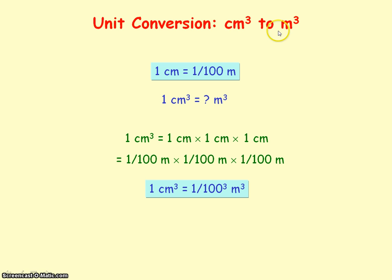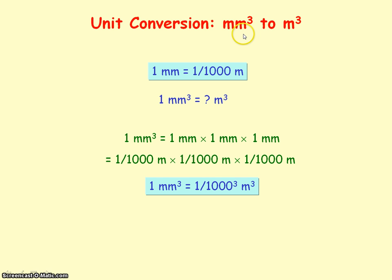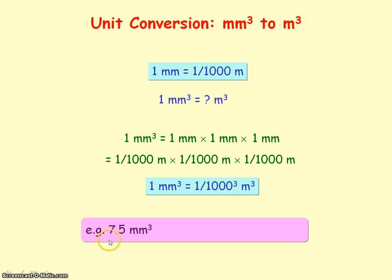To convert centimetres cubed to metres cubed, we divide by one hundred cubed. So to convert 2.5 centimetres cubed into SI units of metres cubed, we divide by one hundred cubed. Finally, to convert millimetres cubed to metres cubed, we divide by one thousand cubed — a thousand because we're dealing with milli, and cubed because we're looking at three dimensions. So to convert 7.5 millimetres cubed into SI units, we divide by one thousand cubed.